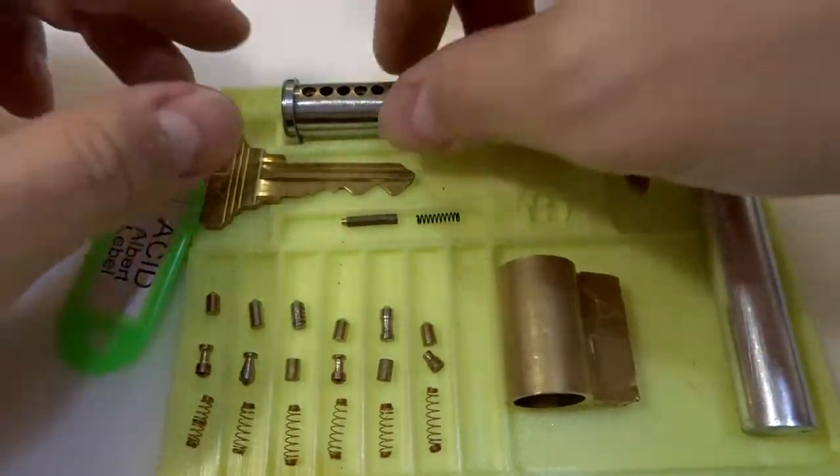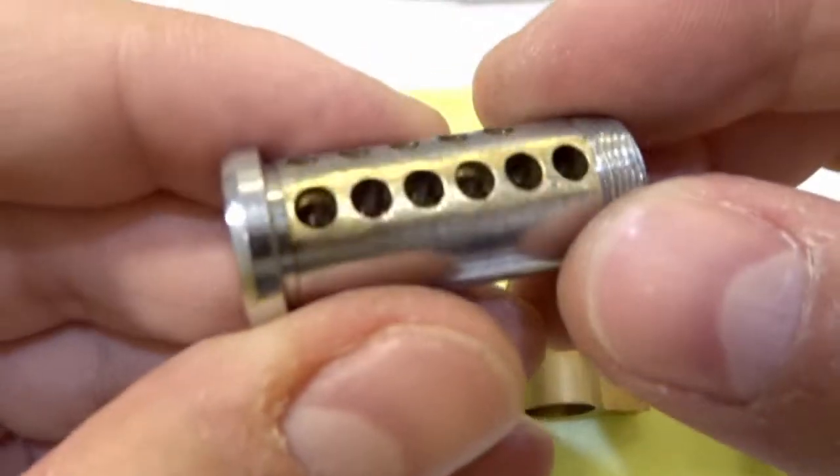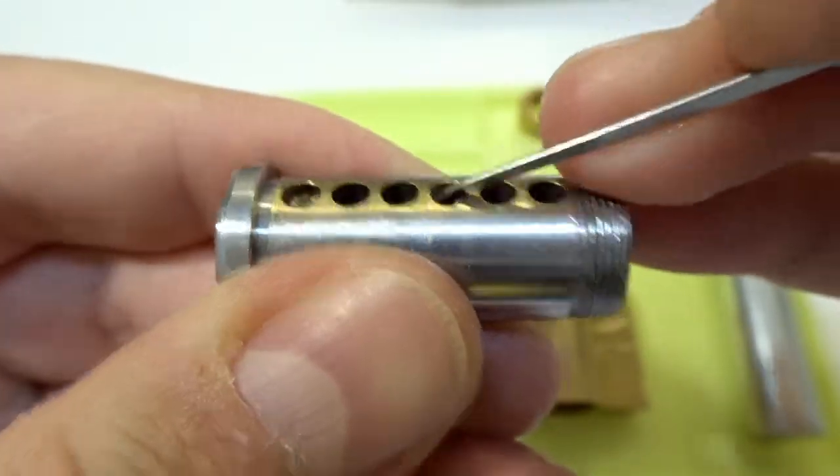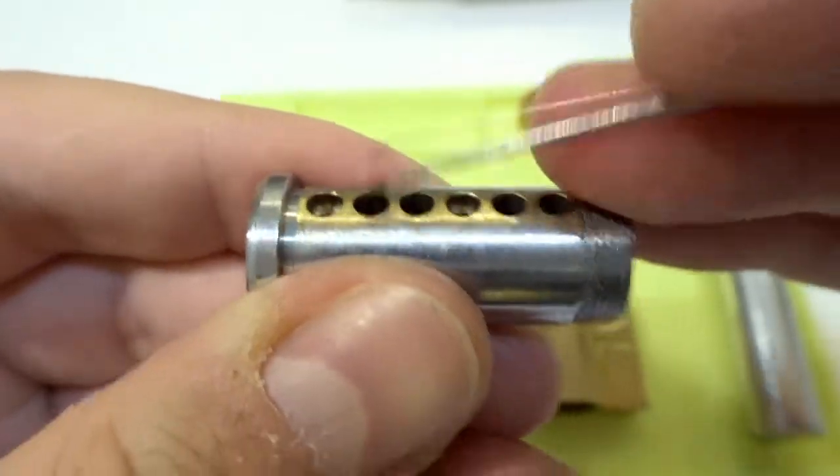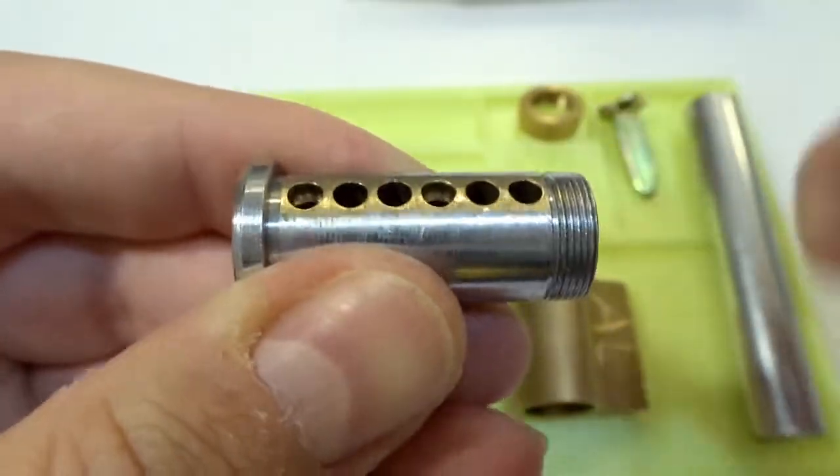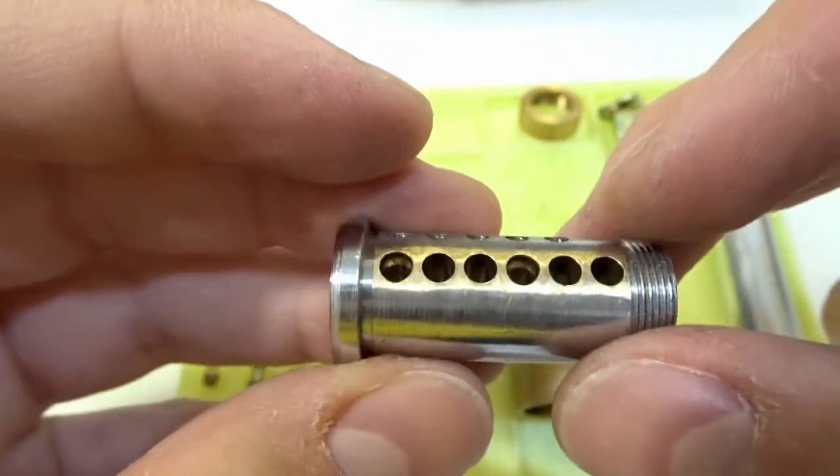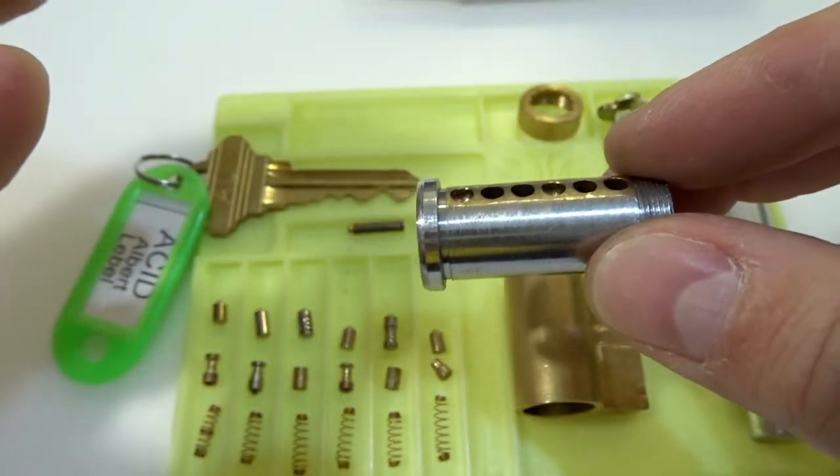Finally I disassembled this one. Let's check first the core. Nice counter milling on pins one and four, nothing done on others. I'm glad. The T pin was on chamber six, not on five.